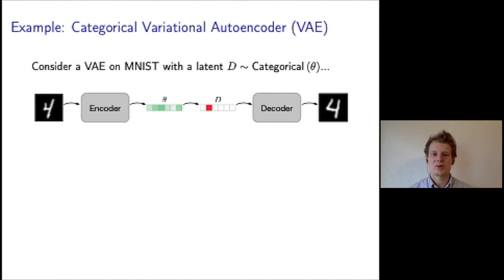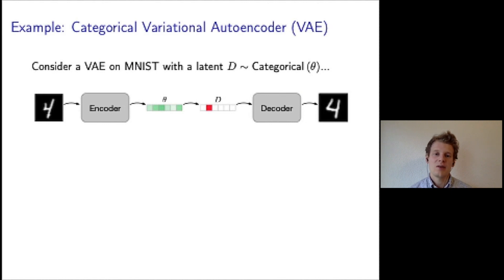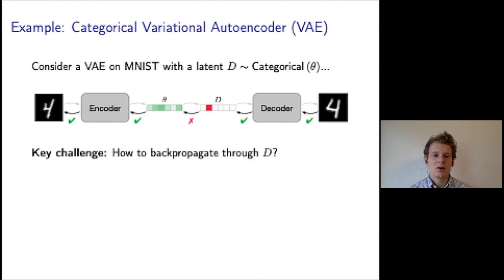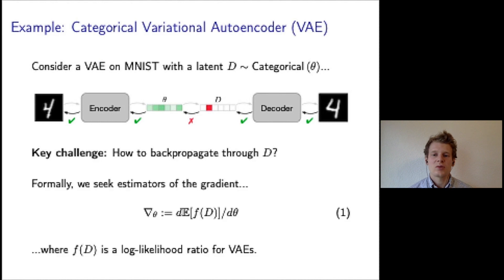Here is a simple example of such a model: a variational autoencoder on the MNIST dataset with a categorical latent variable d. This model takes an image from the dataset as input and uses a trainable encoder — for example, a convolutional or feed-forward neural network — to output the logits of a categorical distribution. We use theta and green arrays to denote the logits, and then sample d from a categorical distribution parameterized by theta. d is represented as a one-hot vector, with a one at the second position indicating the second category was sampled. Finally, d is passed to a trainable decoder to output the reconstruction of the original input image.